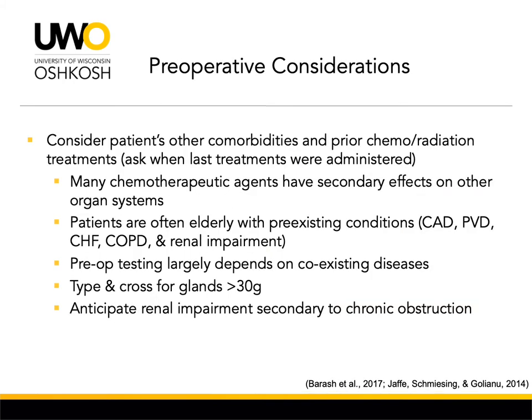When planning our anesthetic, we need to consider the patient's other comorbidities as well as assess for prior chemo and radiation treatments. It is important to ask when the last radiation or chemo treatment was administered, if applicable, as many chemotherapeutic agents have secondary effects on other organ systems. Patients presenting for this procedure are often elderly with pre-existing conditions such as coronary artery disease, peripheral vascular disease, CHF, COPD, and renal impairment.